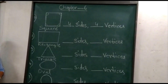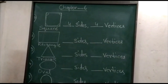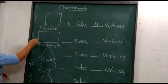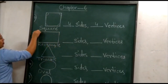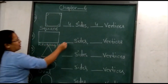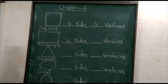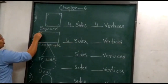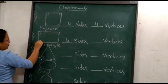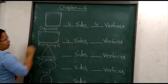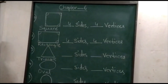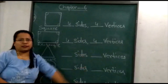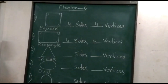Now let's come to number 2, that is a rectangle. A rectangle has how many sides and how many vertices? Sides: 1, 2, 3, 4 — 4 sides. A rectangle has 4 sides. And vertices: 1, 2, 3, 4 — 4 vertices. A rectangle has 4 sides and 4 vertices.